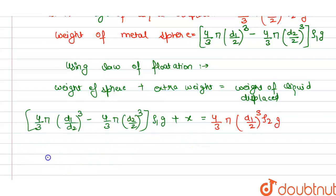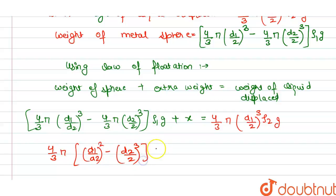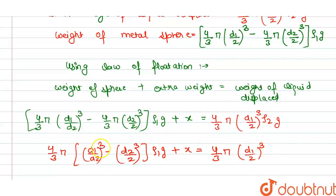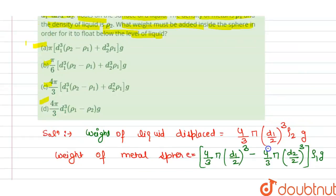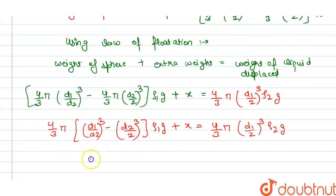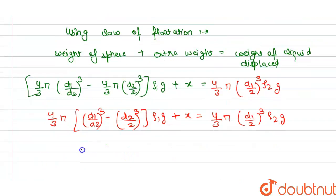Taking common factors, we can write: (4/3)π × [(d1/2)³ − (d2/2)³] × rho1 × g + x = (4/3)π × (d1/2)³ × rho2 × g.